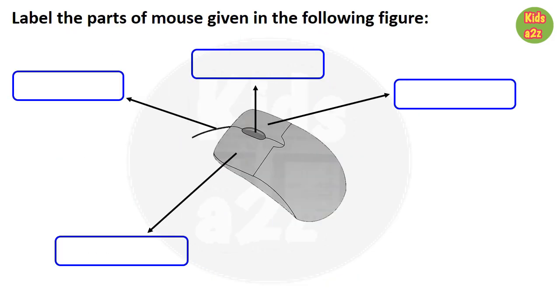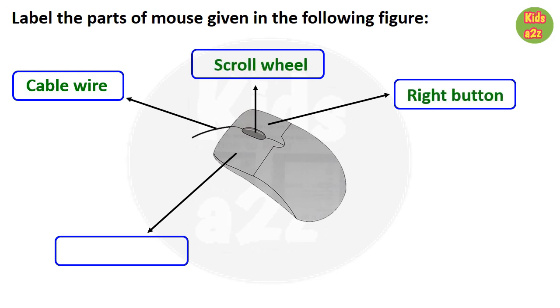Here, kids need to label the different parts of a mouse, like cable wire, scroll wheel, right button, and left button.